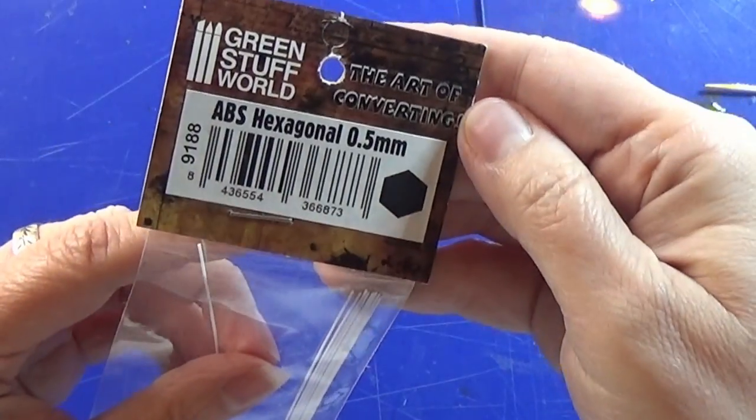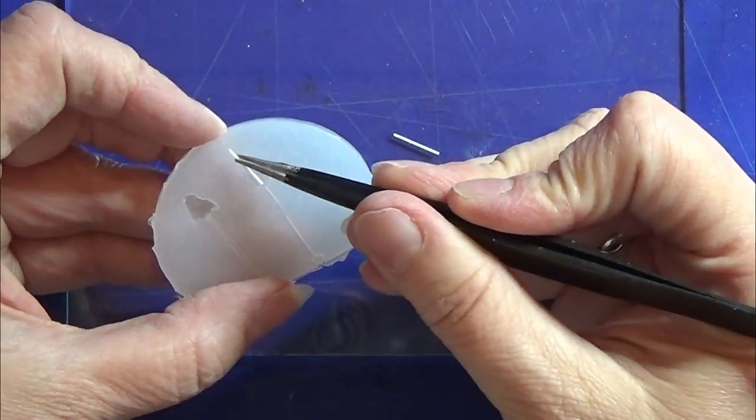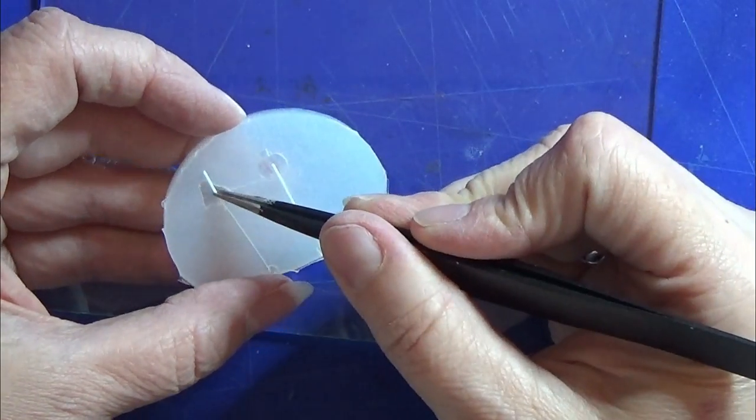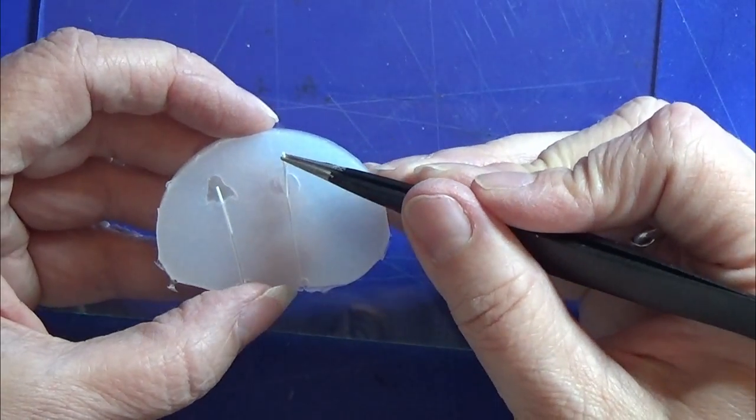I have these small plastic beams from Green Stuff World. This is actually hexagons. I cut them into strips of one centimeter and I'm going to place them in the mold like you see right here.